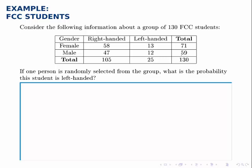Now, we're asked: if we randomly select one person from this group, what is the probability that the student is left-handed? We need to find the number of ways we could select a left-handed student divided by the total number of ways we could select any student. The number of ways to select a left-handed student is just the number of left-handed students. Going to the left-handed column, the total there is 25, which we could have gotten by adding the 13 and the 12. So there are 25 left-handed students, meaning 25 ways to select a left-handed student.